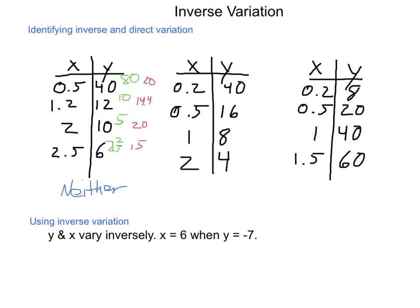Next, let's look at the second table. 2 tenths, 40, 5 tenths, 16, 1, 8, 2, 4. Let's try looking at direct variation first. So, we're going to take 40 and divide it by 2 tenths, and we get an answer of 200. 16 divided by half is 32. 8 divided by 1 is 8. 4 divided by 2 is 2. So, we do not show direct variation here. Our quotients are not the same.